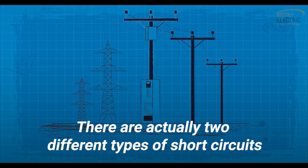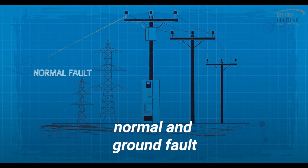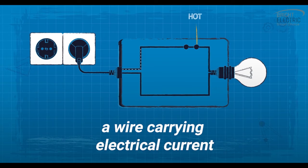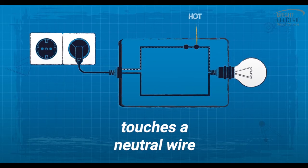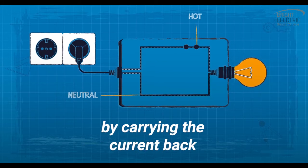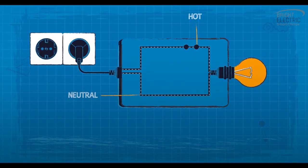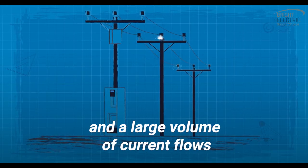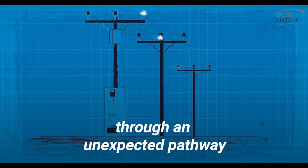A normal short circuit occurs when a hot wire - a wire carrying electrical current - touches a neutral wire, which is the wire that completes the circuit by carrying the current back to the original power source. When this happens, resistance lessens and a large volume of current flows through an unexpected pathway.